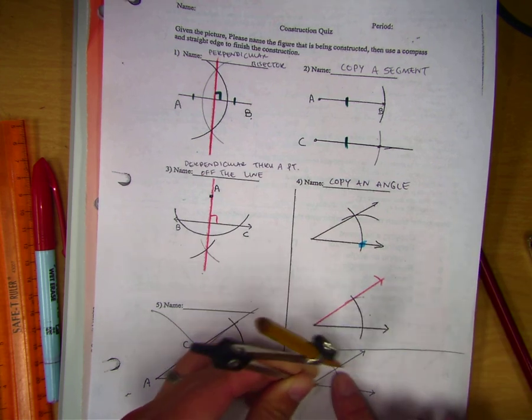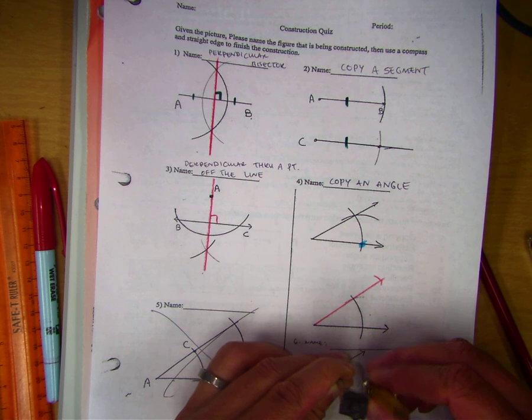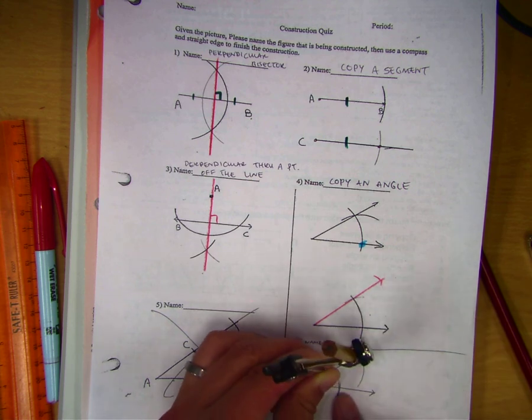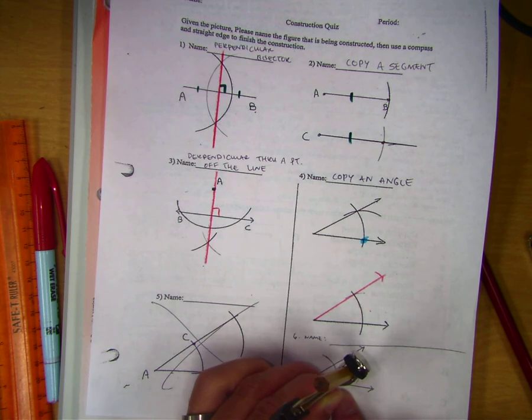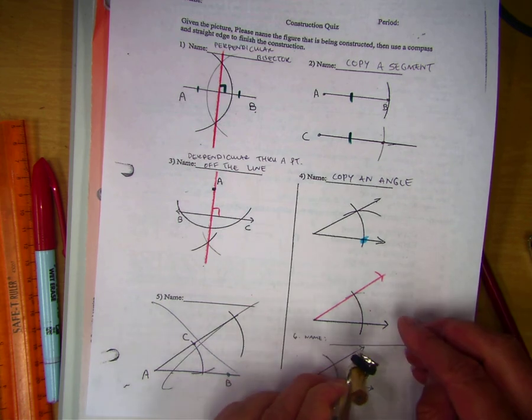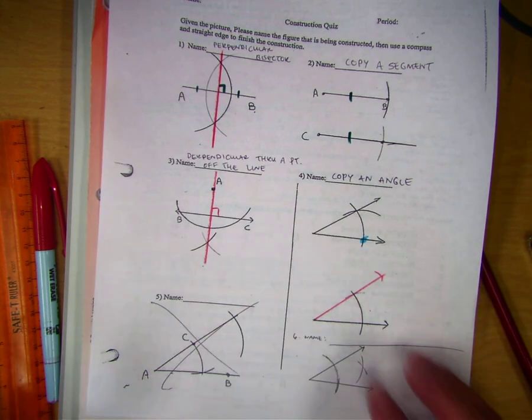So now I'm just going to go to my points of intersection up here. Make an arc. Go down to this one. Make an arc. X marks the spot.